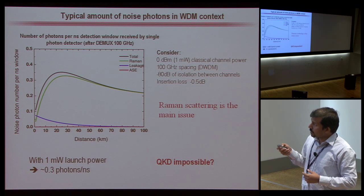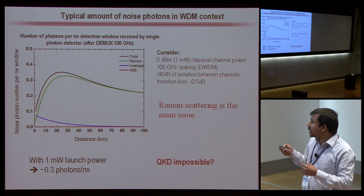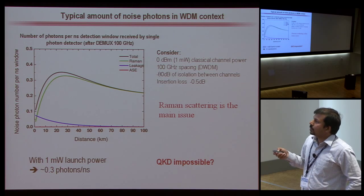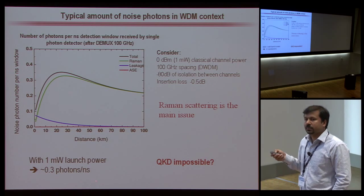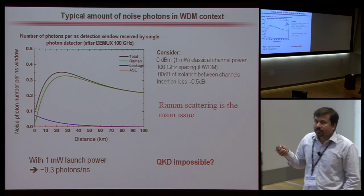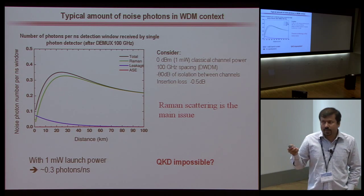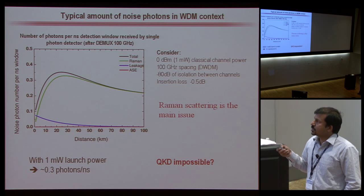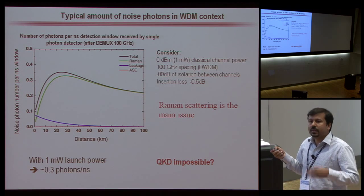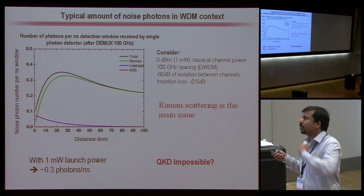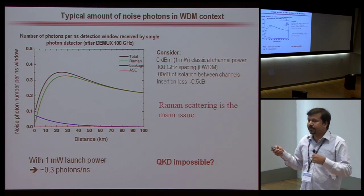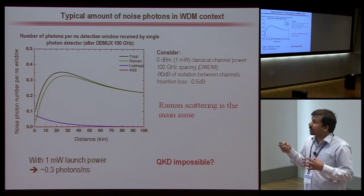On average, at higher distances with one milliwatt of classical channel power, you have 0.3 photons per nanosecond. Normally discrete variable QKD employs weak coherent laser pulses with a mean photon number from 0.1 to 0.4. So the question is whether QKD is possible with such classical channel power.